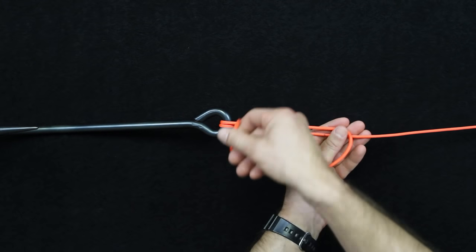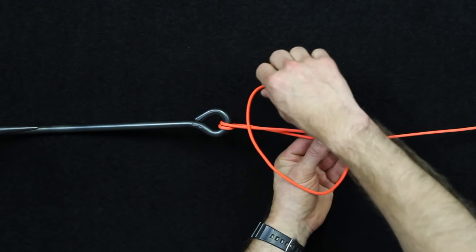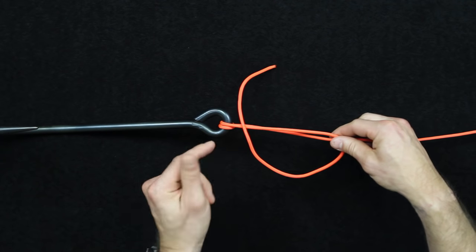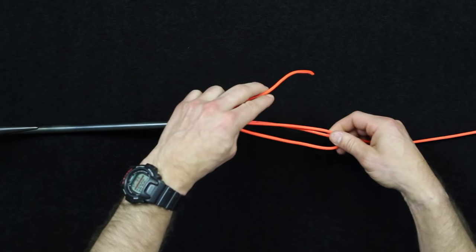The next step is to form a big D with the line. I'm actually going to pull a little more slack here so we have more to work with, but you're going to wrap around the two standing parts of this line now.